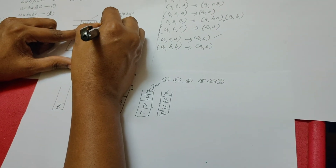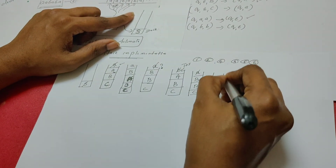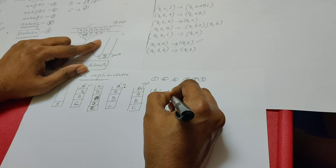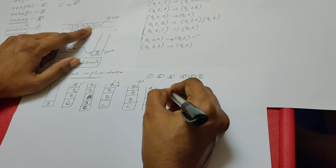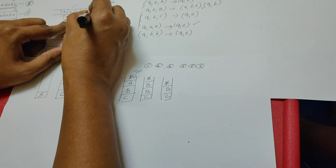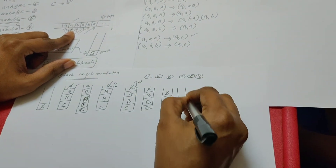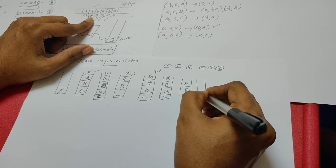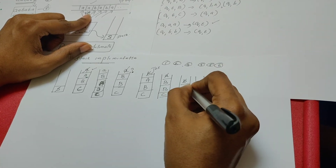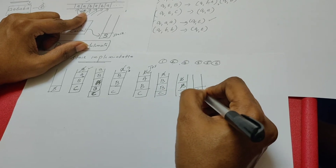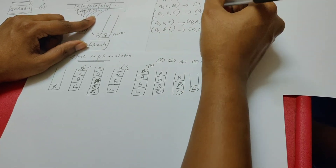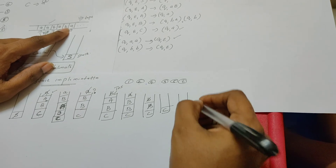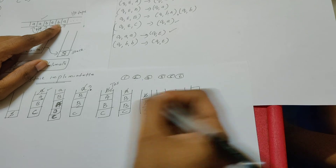The read-write head advances to the next symbol, b. The top of the stack is now variable B. For B, the rule we select maps to terminal b — so we push terminal b. Now this terminal and what the read-write head is reading are the same, so we pop b. The read-write head advances. Eventually, the top of the stack contains variable C, which is replaced by terminal a. This a matches what the read-write head reads, and finally the stack becomes empty.